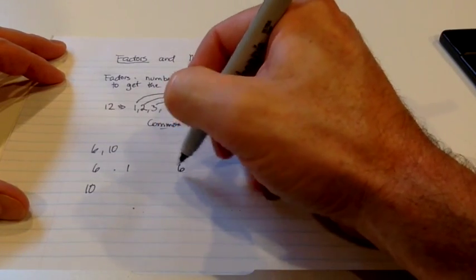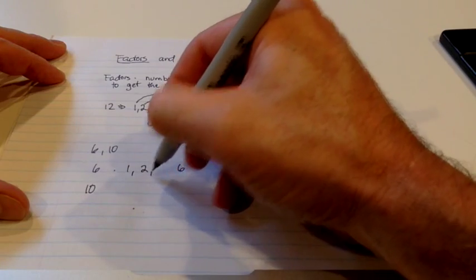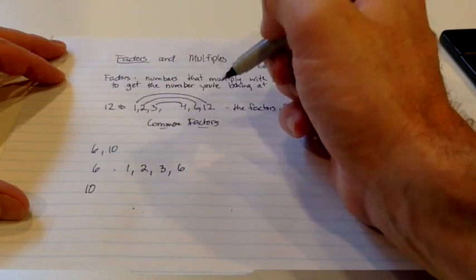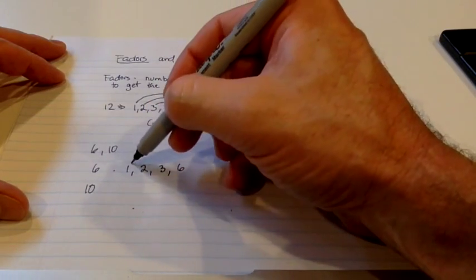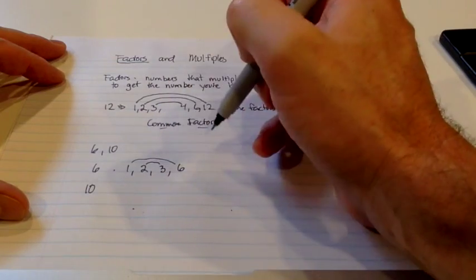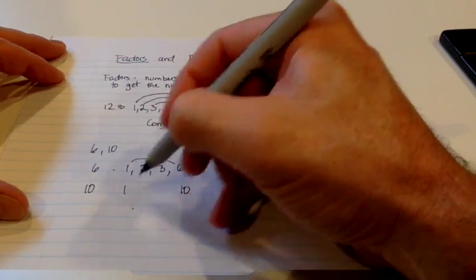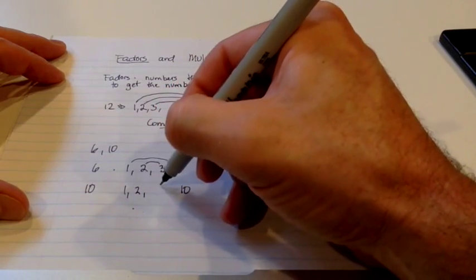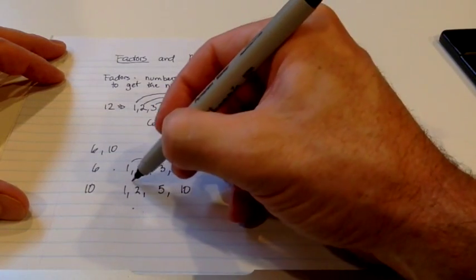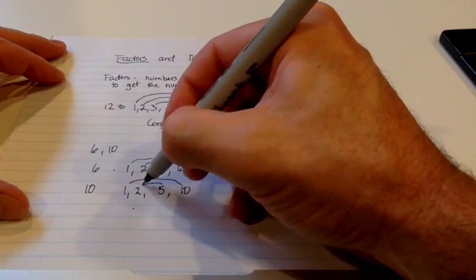So 6, 1 times 6, 2 times 3. These are the factors of 6. 1 times 6, 2 times 3. For 10, we have 1 and 10, 2 and 5. 1 times 10, 2 times 5.